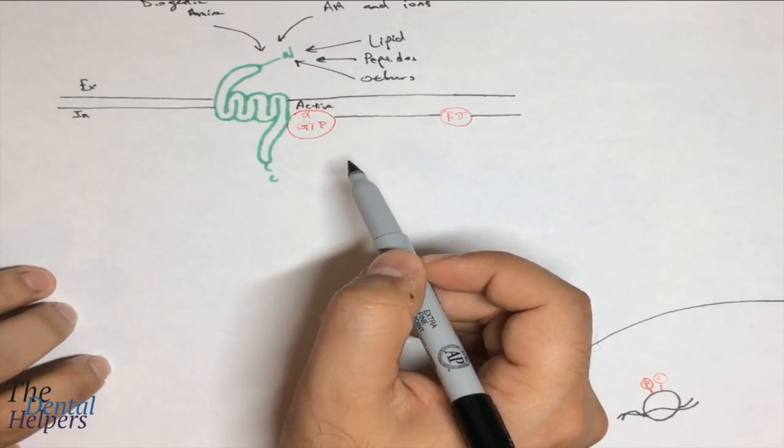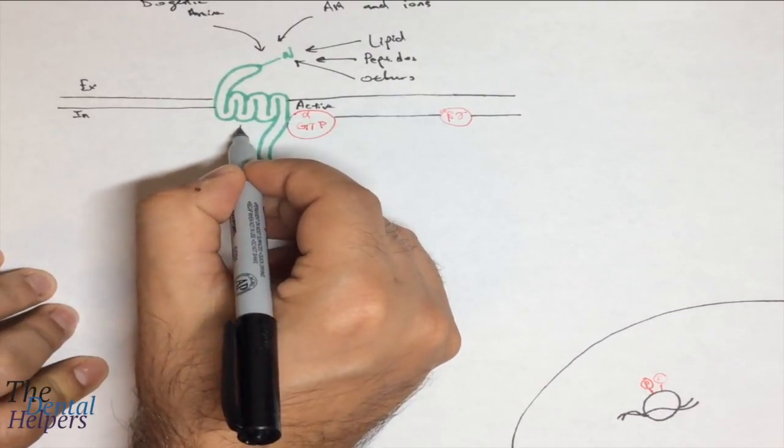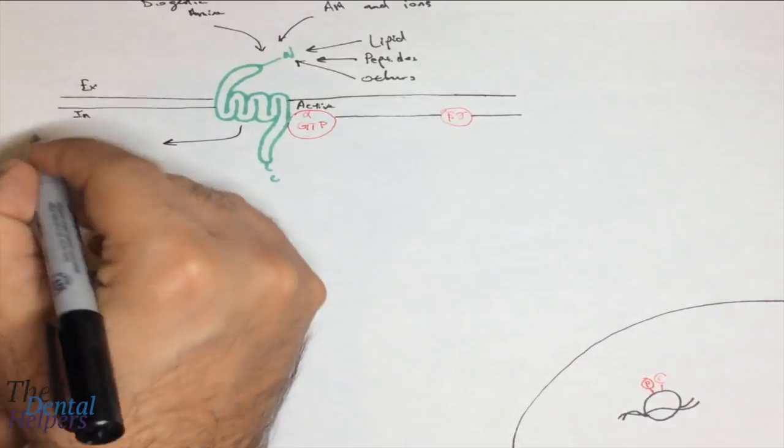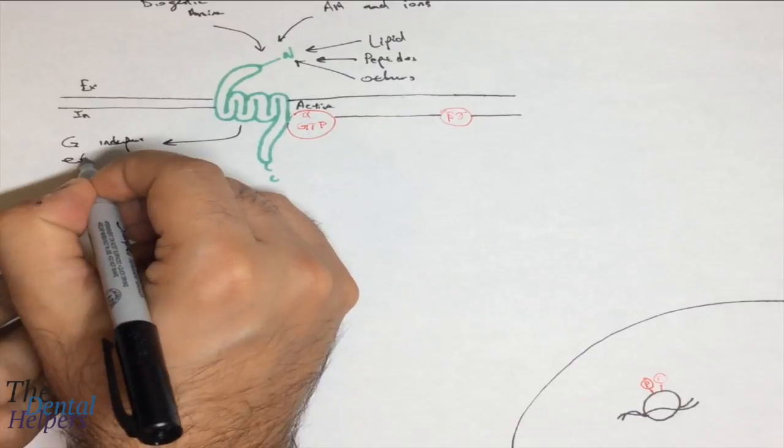There are different routes that we can take once active. You can have, from the GPCR itself, G-independent effector molecules.